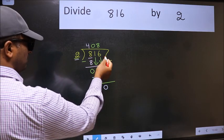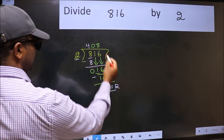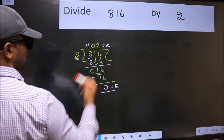No more numbers to bring down. So we stop here. This is our remainder and this is our quotient.